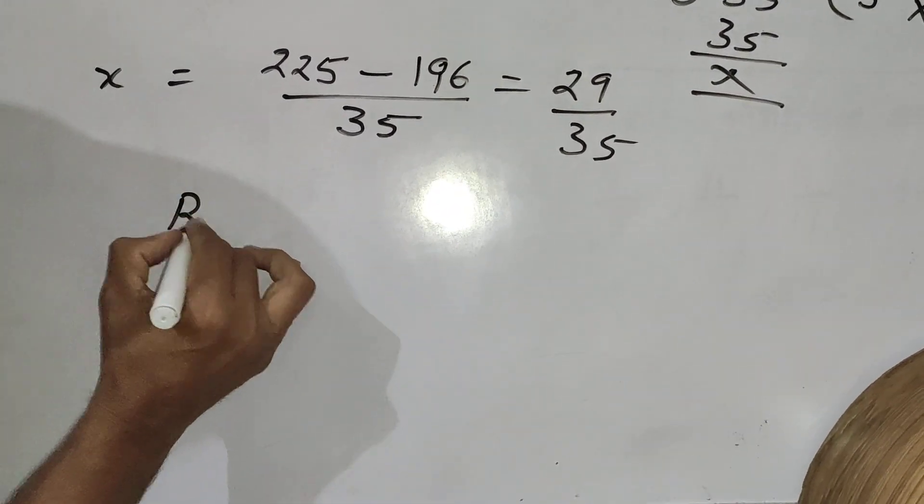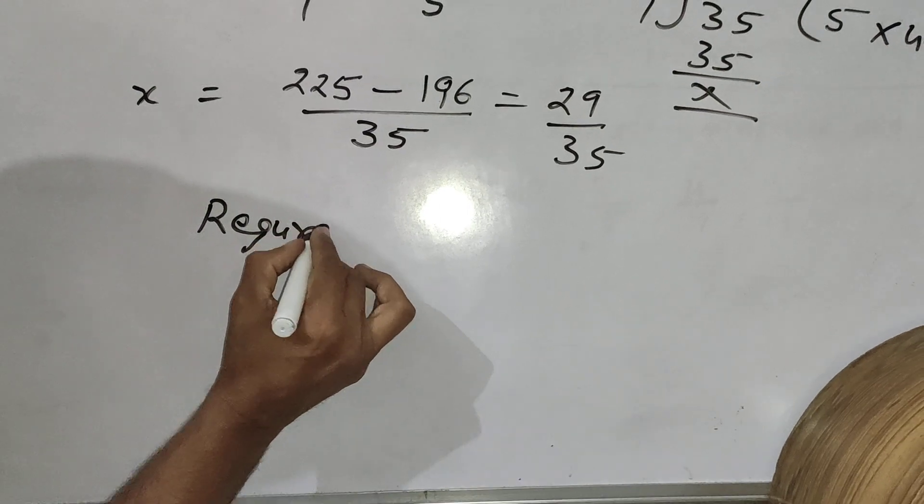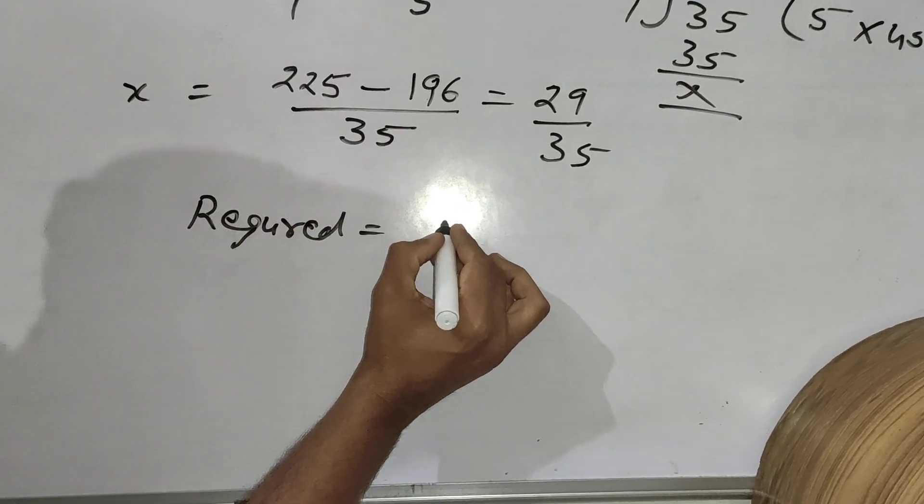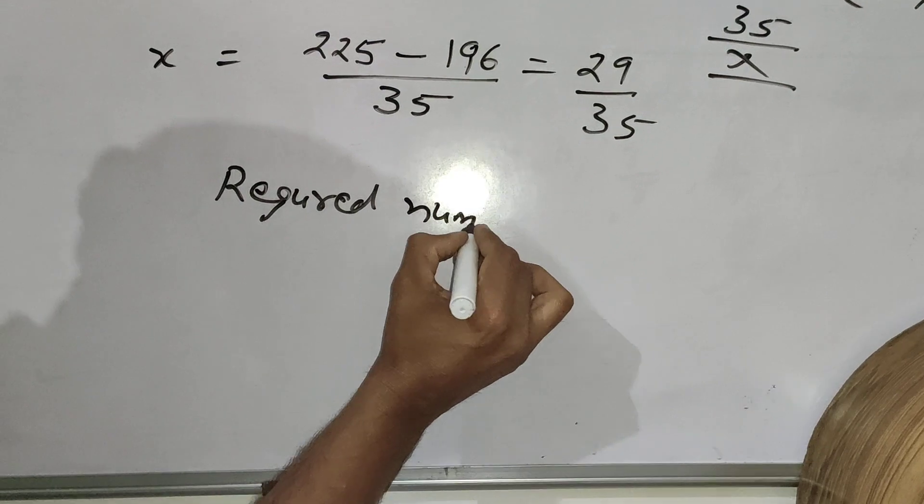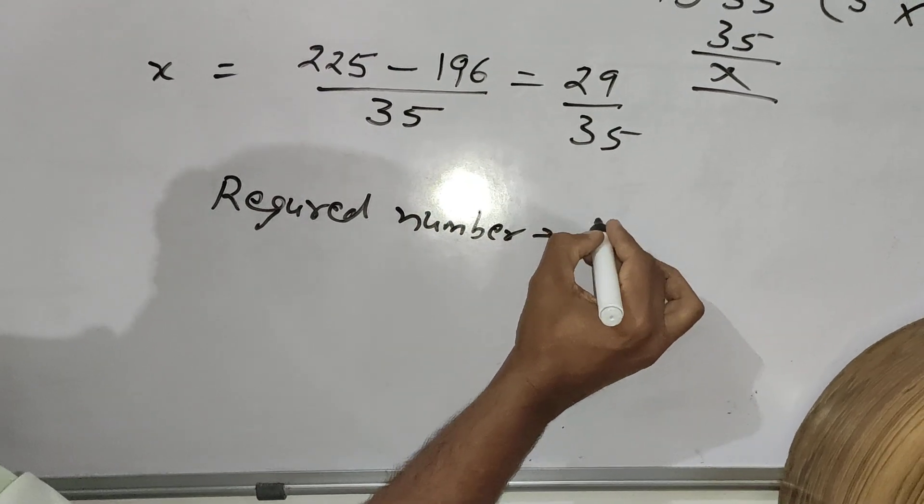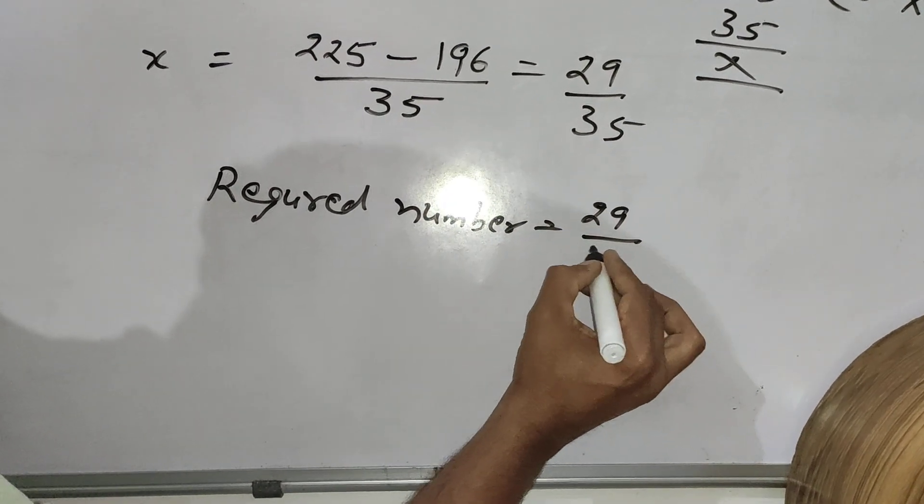This is the required number. 29 by 35, this is the required number.